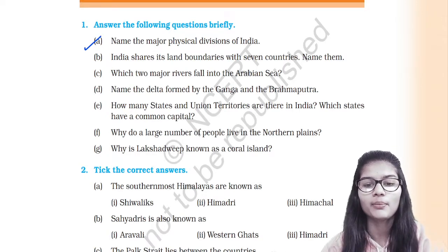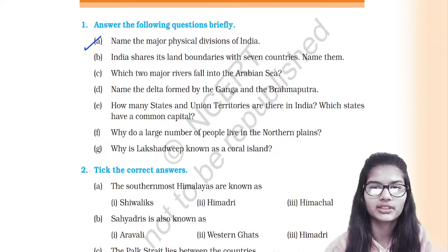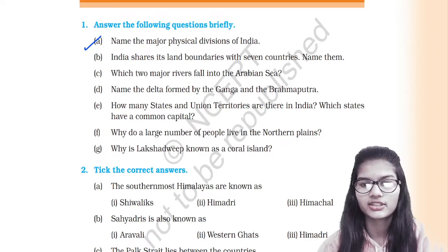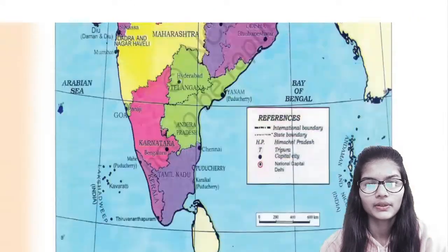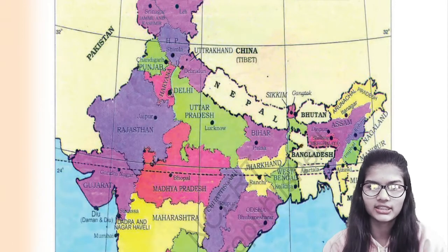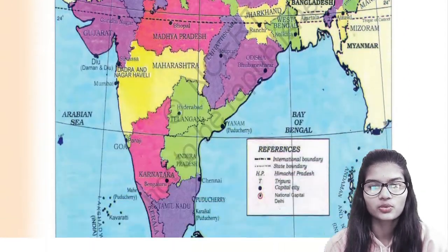Next, India shares its land boundaries with seven countries — name them. The seven countries are: Afghanistan, Pakistan, Nepal, Bhutan, Bangladesh, China, and Myanmar. You will also find these on the map. So this is the answer to question number 2.